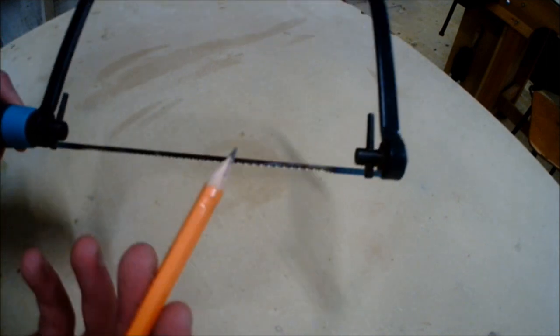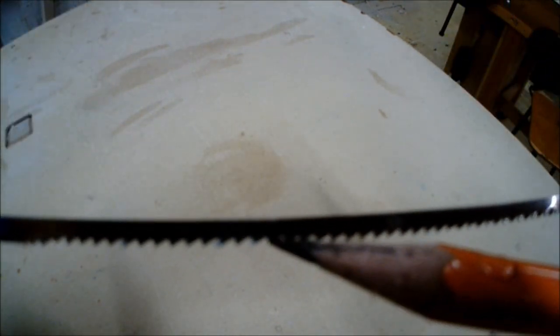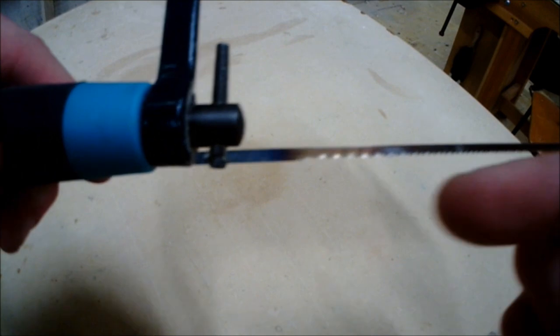The blade is made of steel because it is a strong material, and the teeth face back towards the handle. This means the blade cuts on the backstroke when using it.